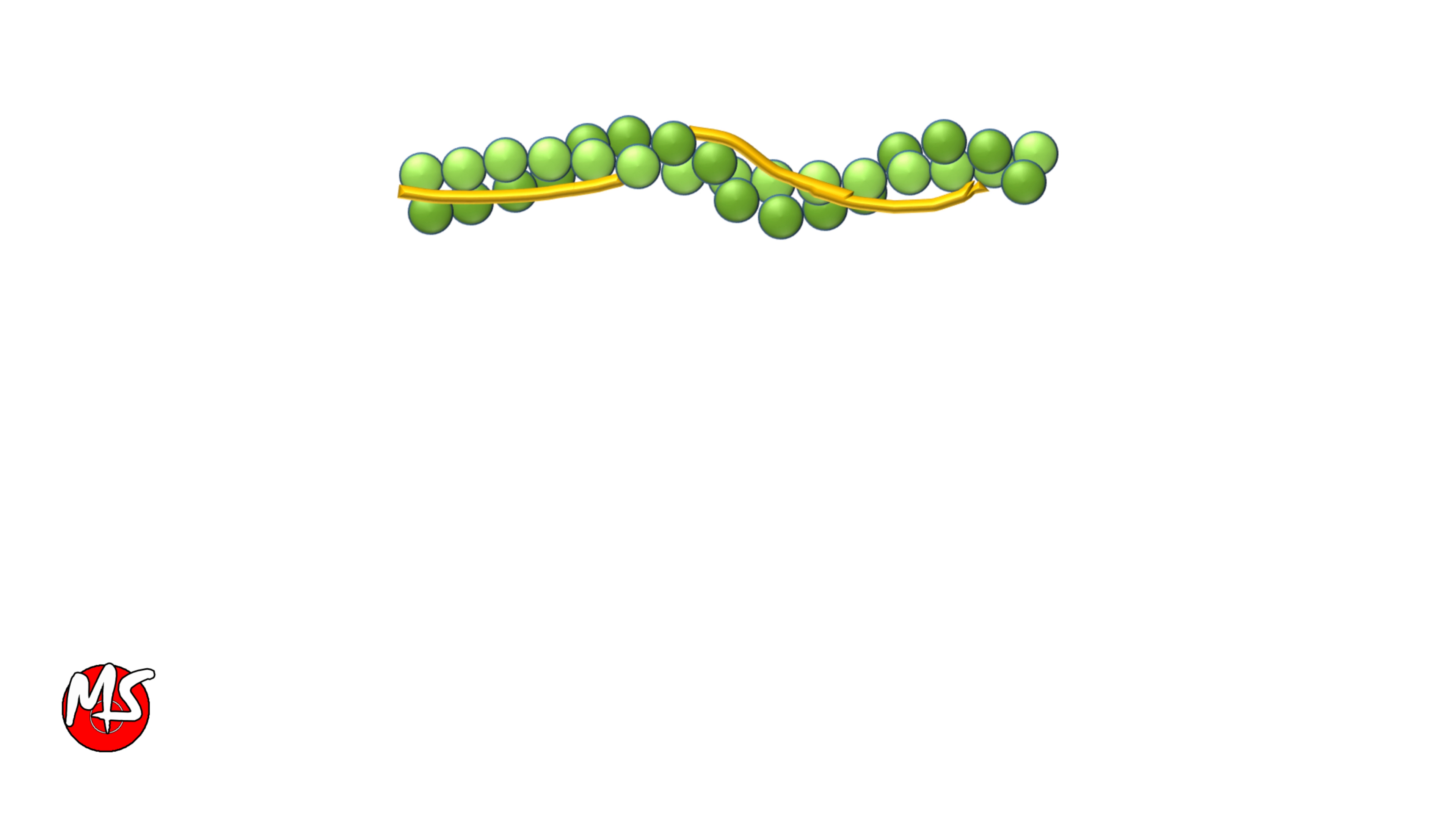It covers the myosin binding site of actin. Thin filament also contains troponin. It has three subunits. Troponin T binds the other subunits to tropomyosin. Troponin I and troponin C contain binding sites for calcium.